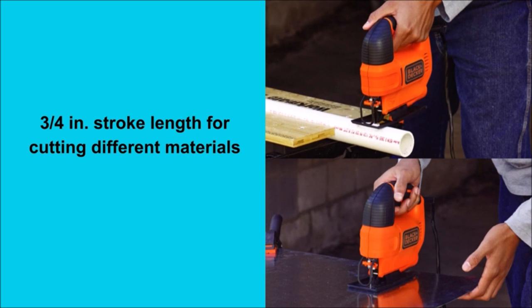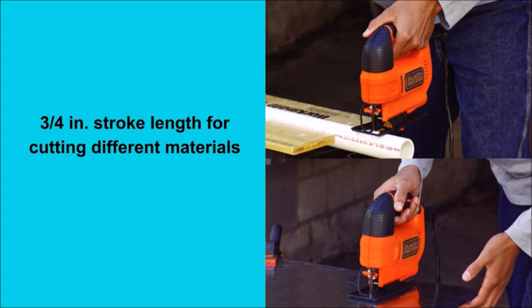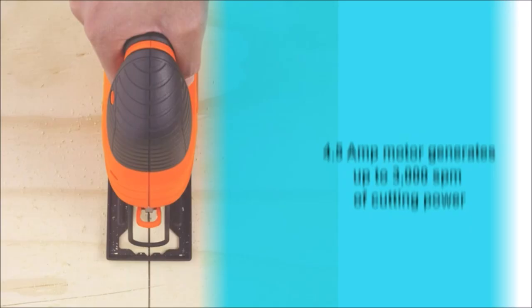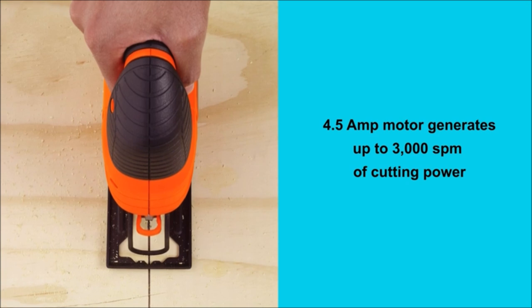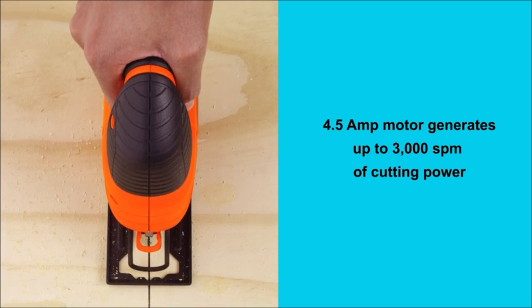Thanks to a variable speed motor that delivers up to 3000 SPM and a wire guard that provides a clear line of sight, the 4.5 amp electric jigsaw provides premium cutting power without sacrificing accuracy. The tilting base plate means you can make beveled cuts.